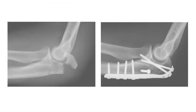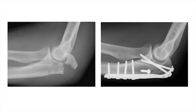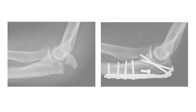In the following lateral radiographs, we are presented with a comminuted fracture of the proximal ulna with an oblique orientation and distal extension, best managed with plate fixation.